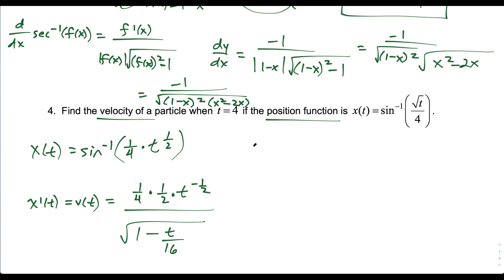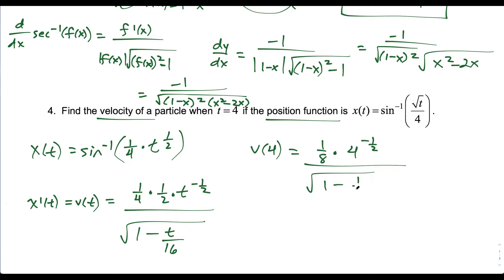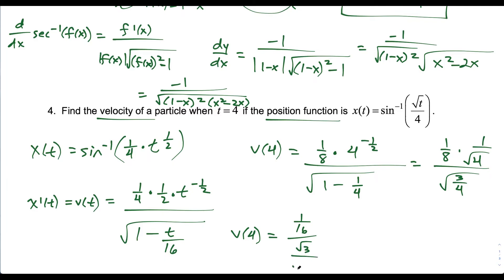Plugging in t equals 4: one fourth times one half is one eighth, and 4 to the negative half is 1 over the square root of 4, which is one half. The denominator becomes the square root of 1 minus 4 over 16, which reduces to 1 minus one fourth, or three fourths. So we have one eighth times one half — giving 1 over 16 — over the square root of three fourths, which equals the square root of 3 over 2. Using keep-change-flip, this becomes 1 over 16 times 2 over the square root of 3, and 2 over 16 reduces to one eighth, giving 1 over 8 radical 3.